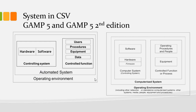It is quite unusual that in the second edition of GAMP 5 the definition of the system omitted the data aspect. This is particularly fascinating given that data integrity, alongside human health and product quality, represents one of the fundamental aspects of GXP. Of course, we should still consider data as a part of the system.